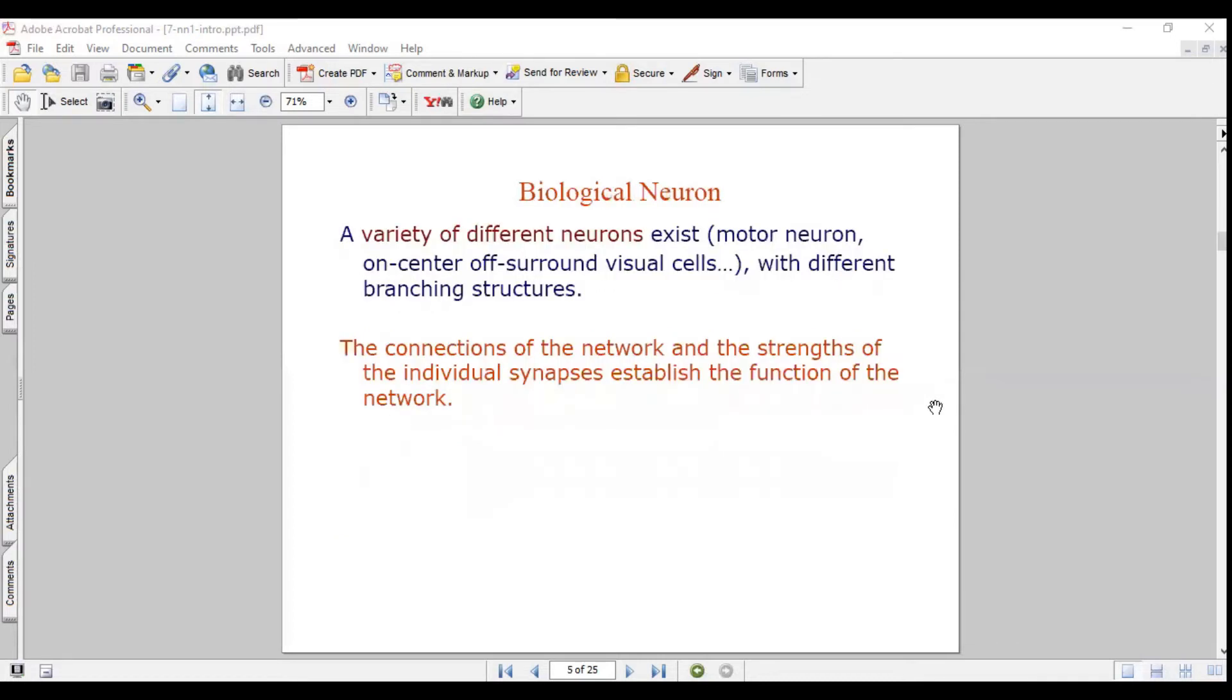In the biological neuron, a variety of different neurons exist: motor neurons, sensory neurons, visual cells, etc. There are different branching structures. The connections of network and strengths of individual synapses establish the function of the neuron.